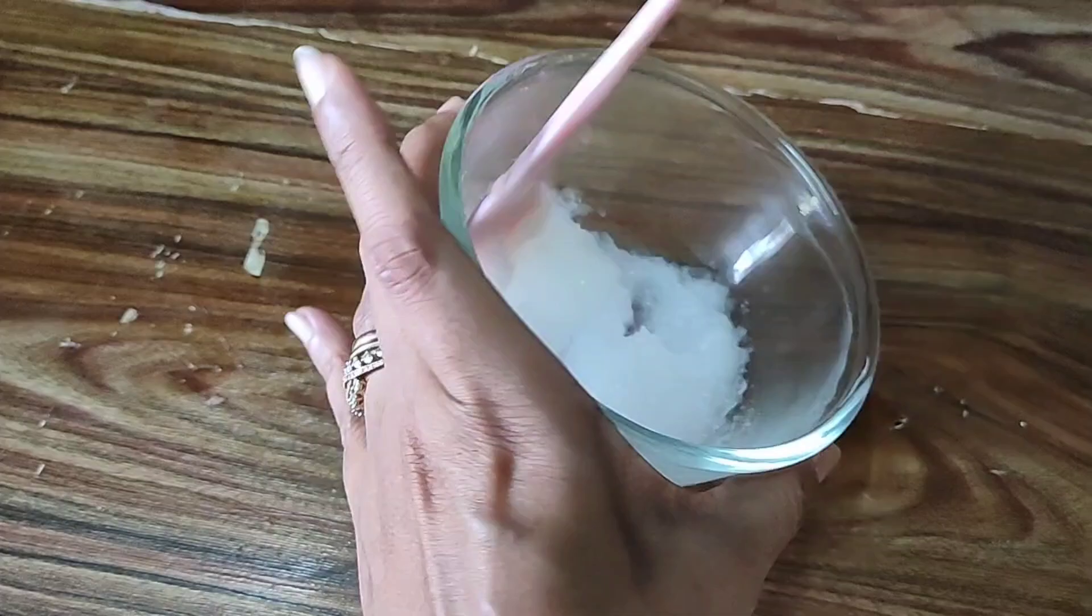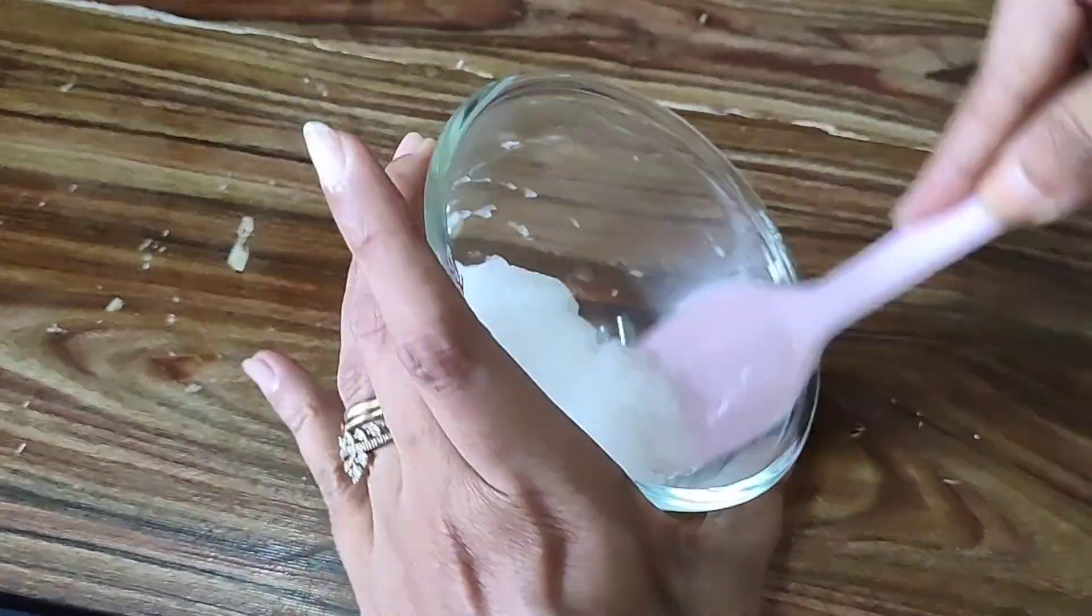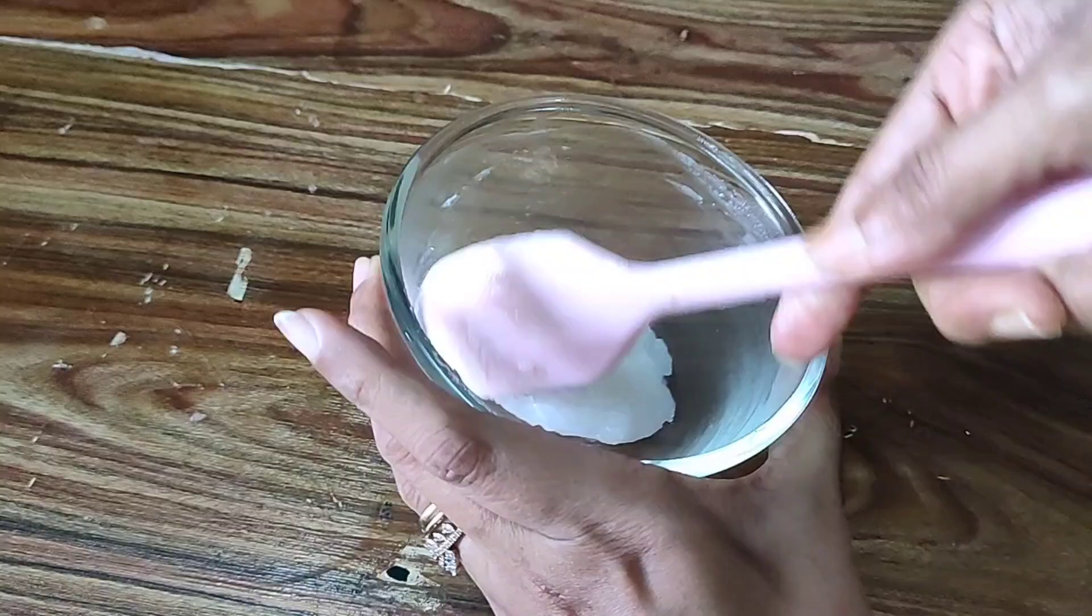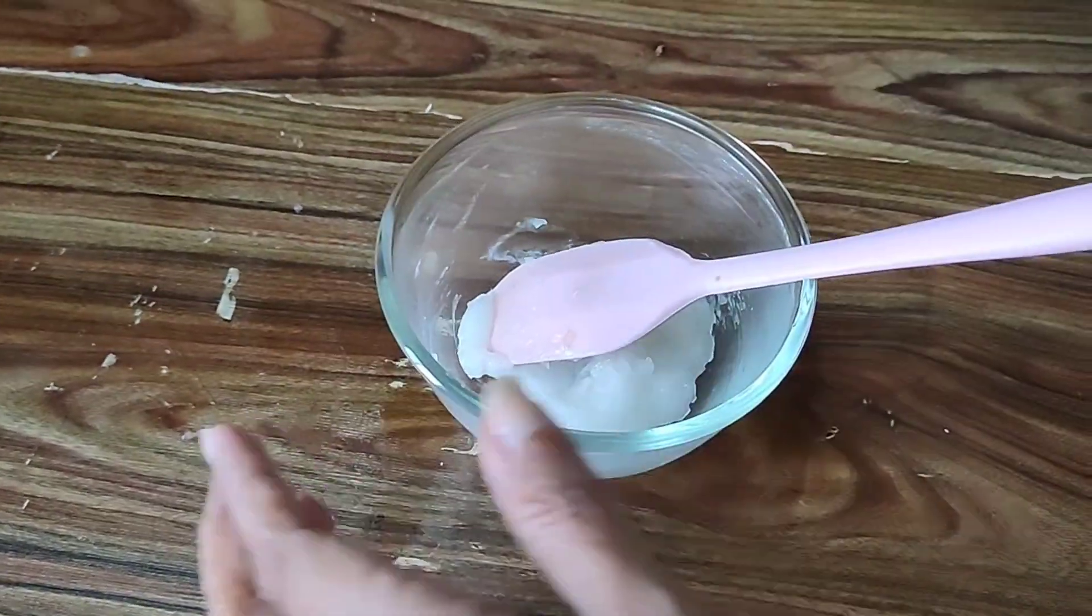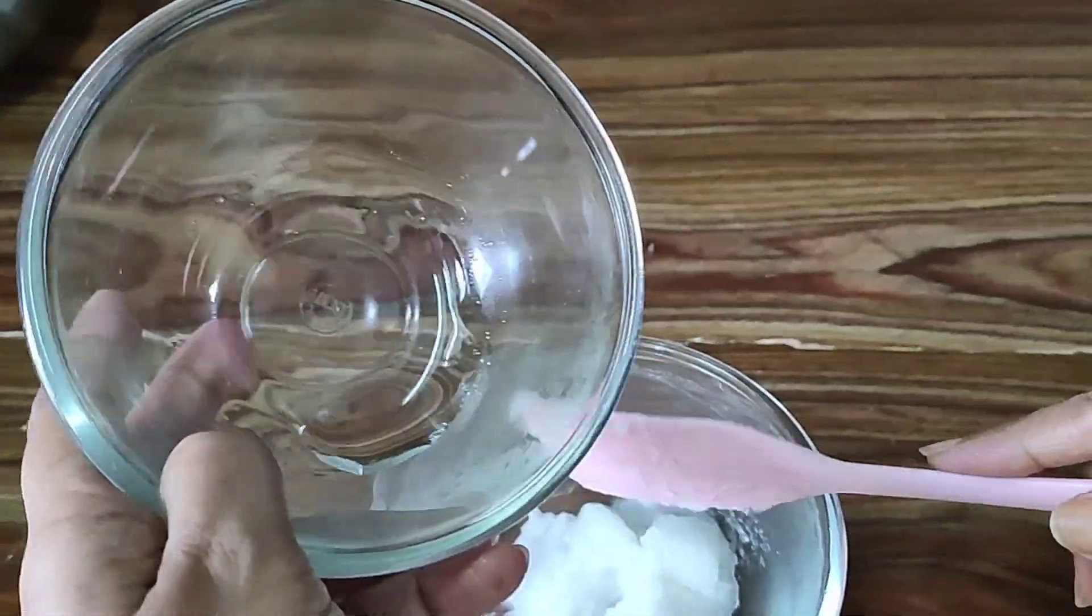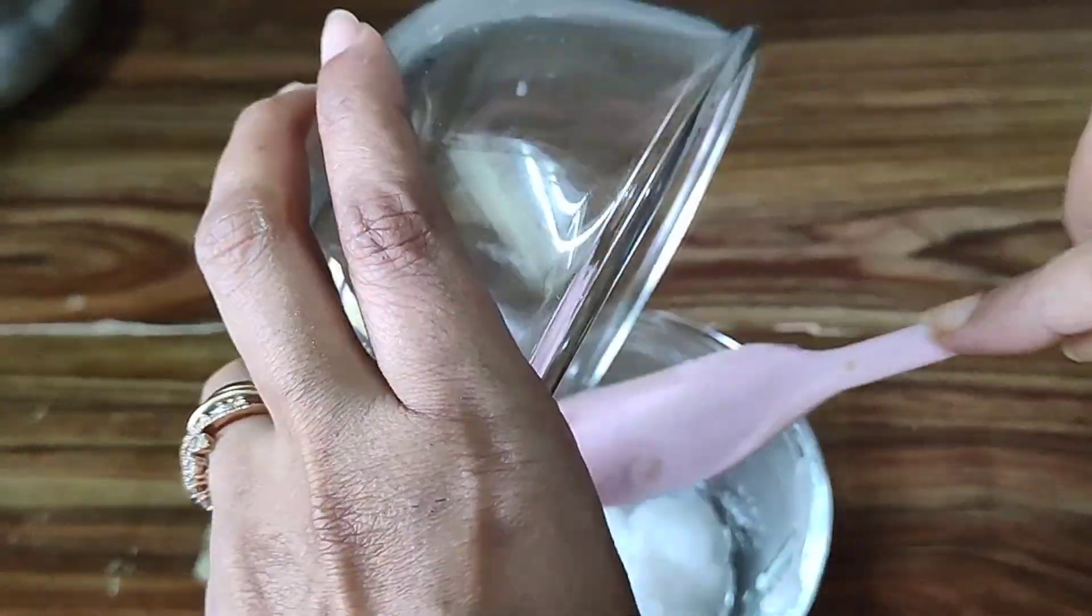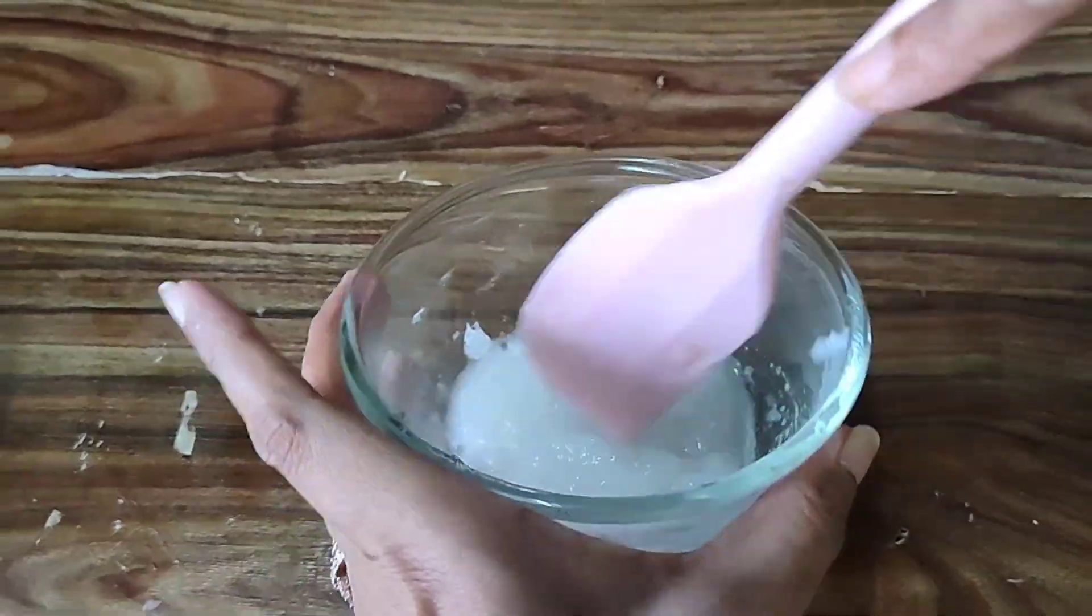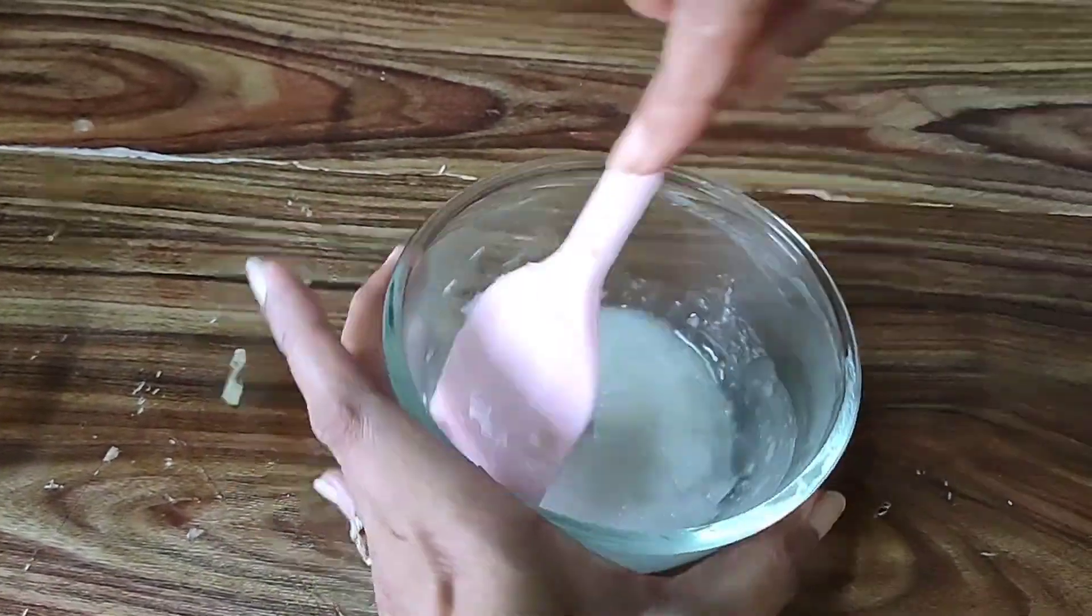I'm blending this with my spatula only because the mini blender will not work since this is very thick. Now I'm going to add my salicylic acid solution, the 2% salicylic acid solution which we had made and kept. We'll nicely mix this. This will thin out a little.